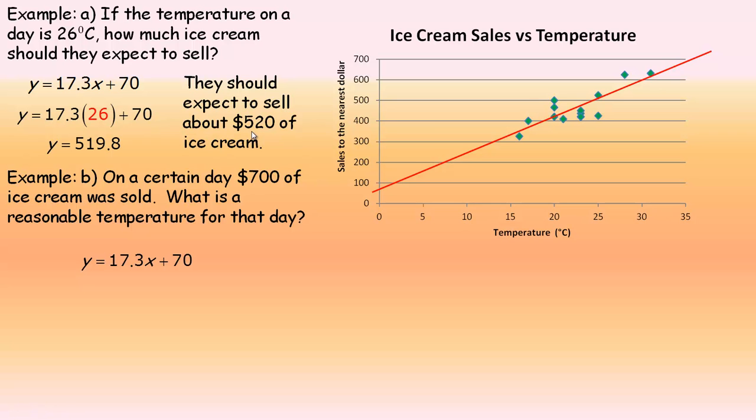They should expect to sell about $520 worth of ice cream. That's approximate—maybe they'll sell $540, maybe $490, but that would be a good estimate. We could read that from the graph. 26 degrees is about right here, so we go up to the graph and over. Yeah, it looks like about $520.